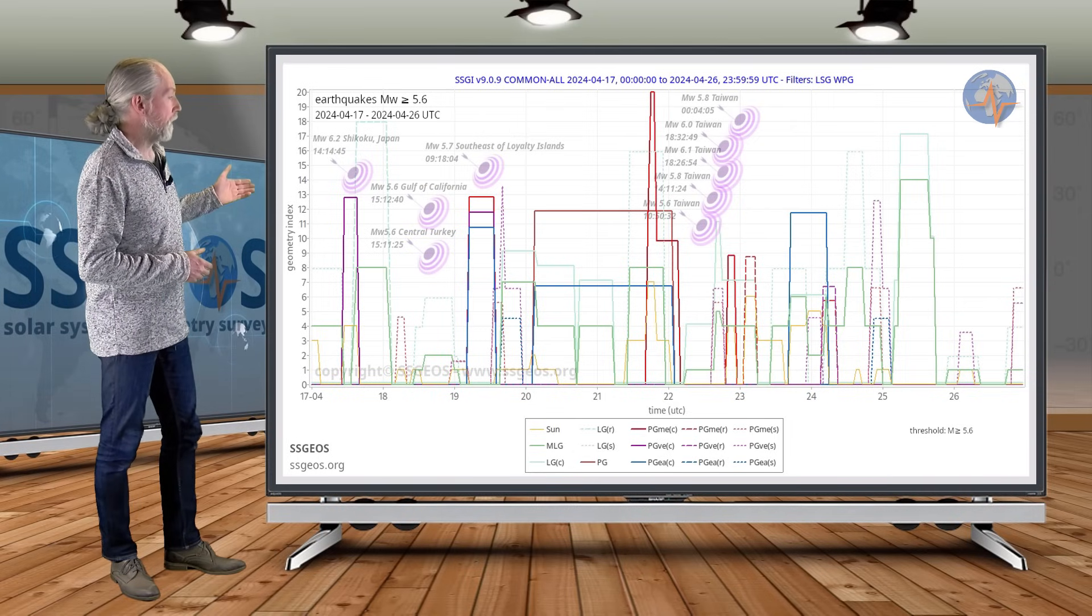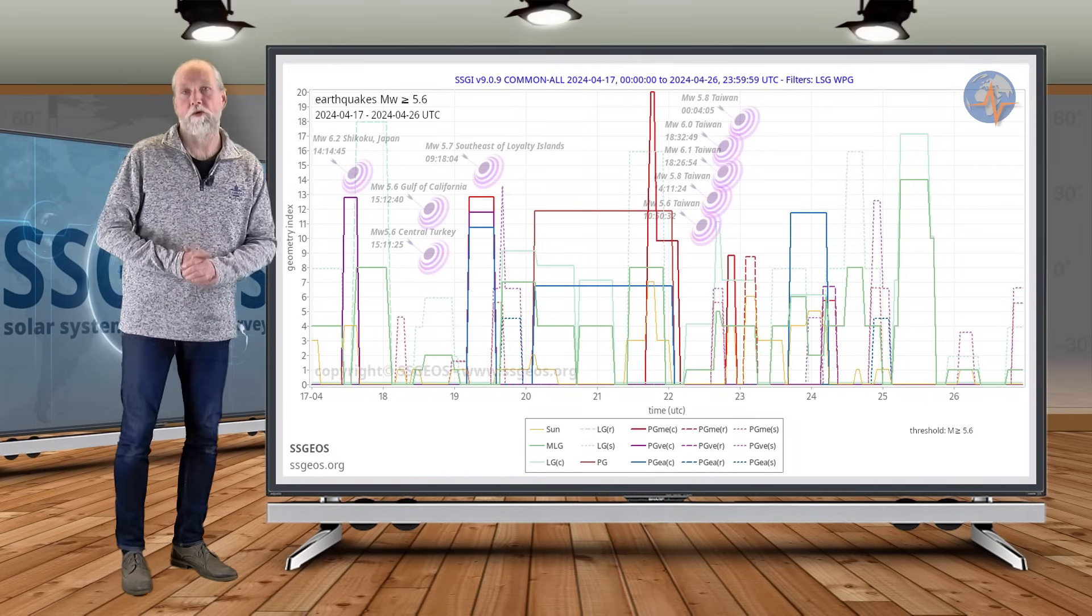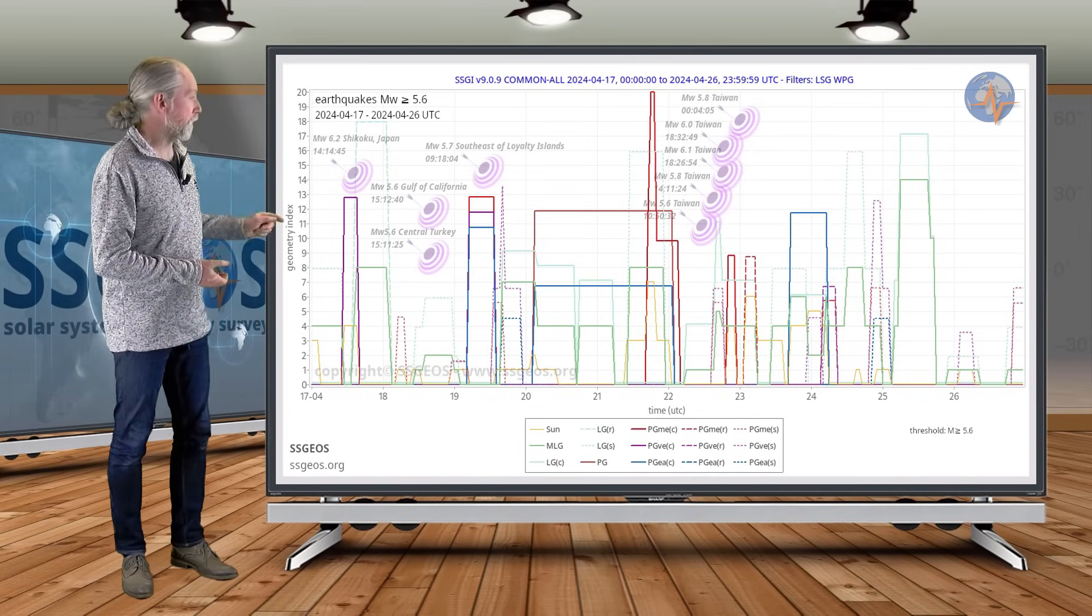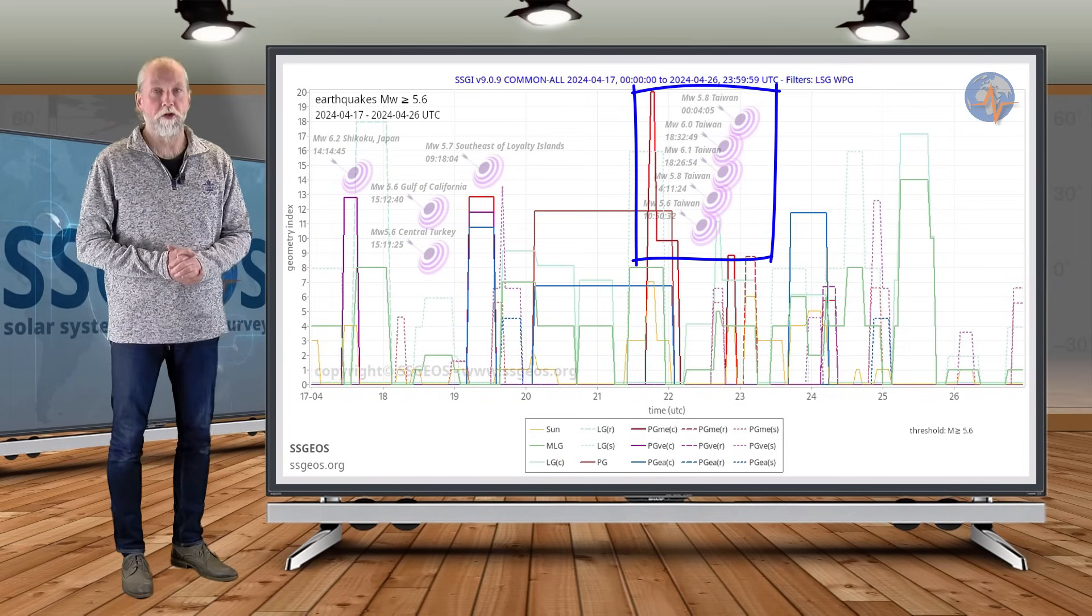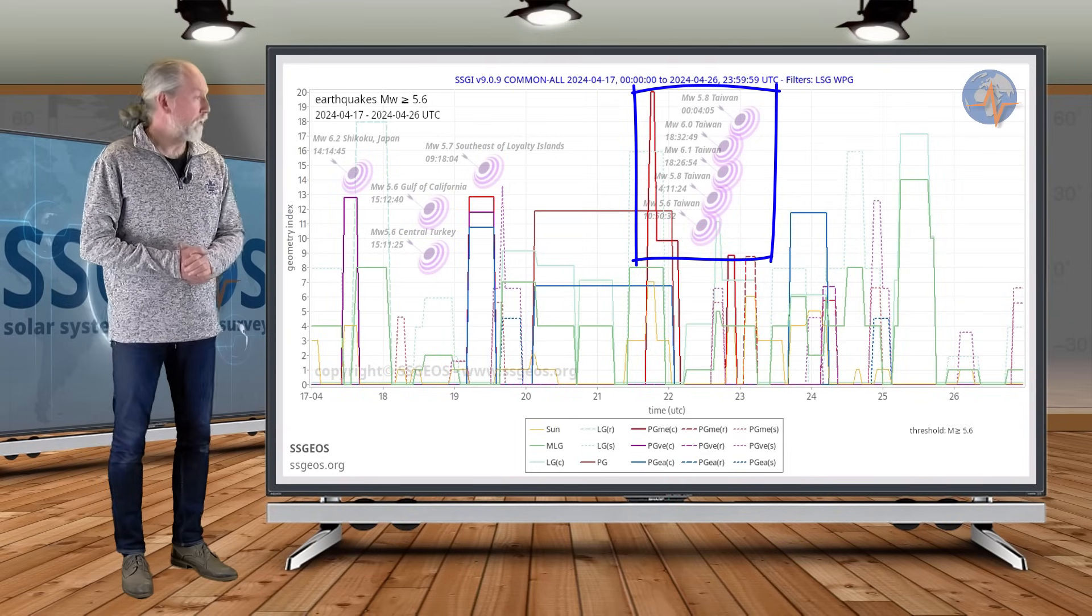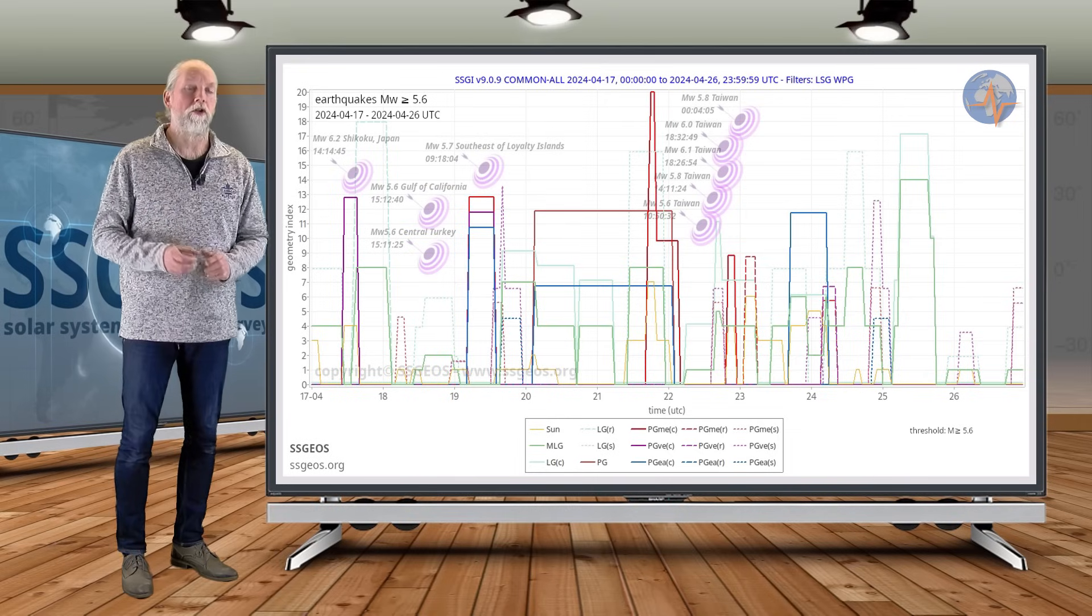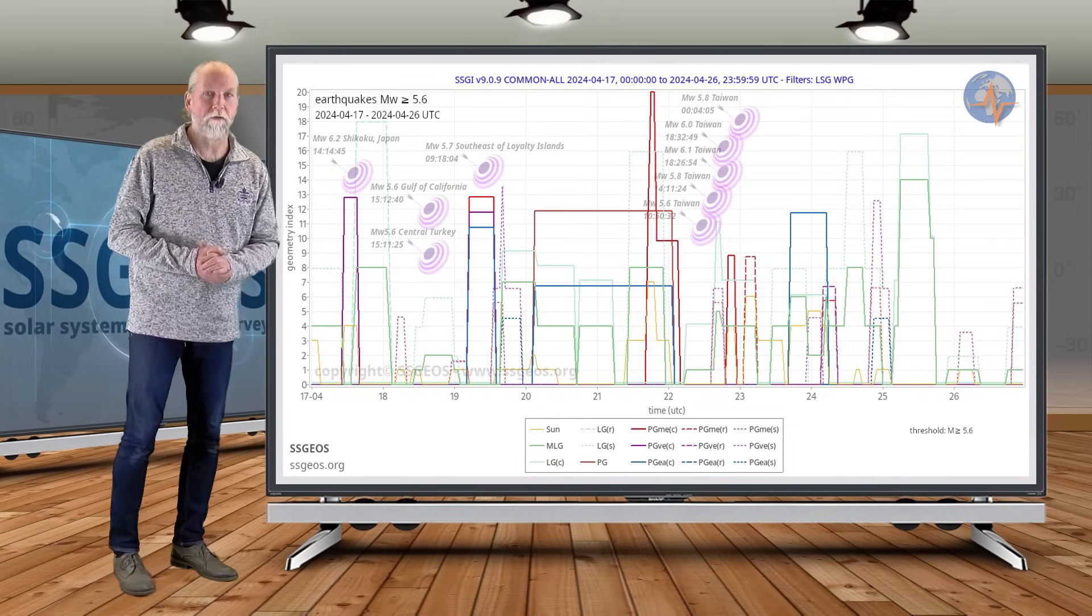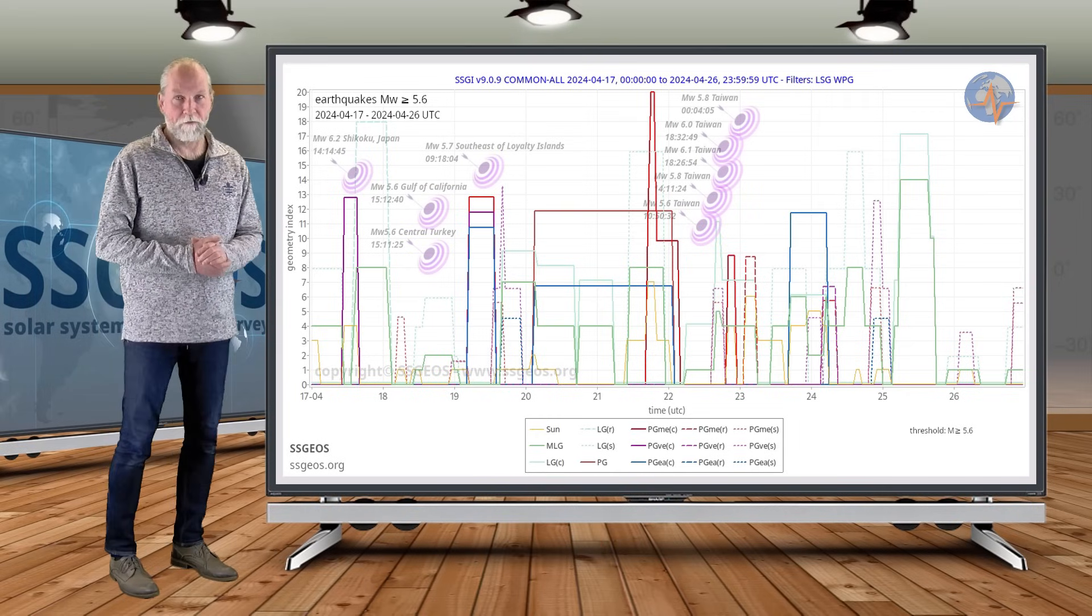Then we had the critical convergence of three planetary conjunctions on the 21st involving Mercury. These are the red peaks, the high red peak later on the 21st. We see right after this geometry occurred an obvious cluster of stronger earthquakes peaking 6.1 in Taiwan. This is a series of aftershocks of the 7.4 magnitude earthquake that happened in Taiwan on the 2nd of April, but the timing of this cluster is impeccable obviously.